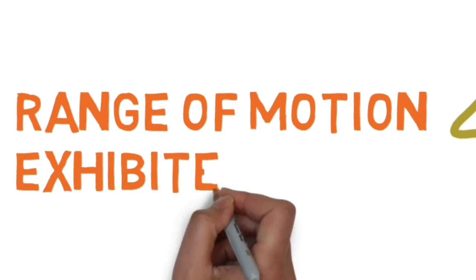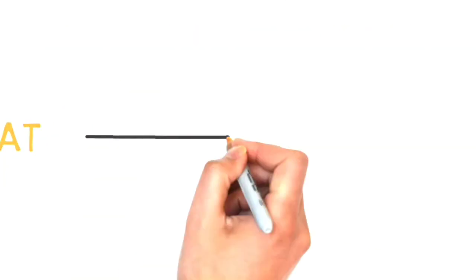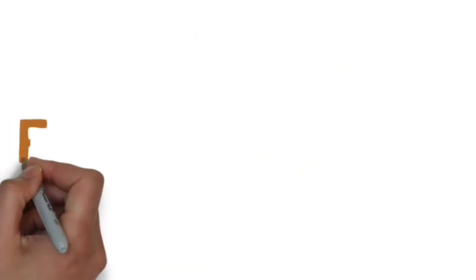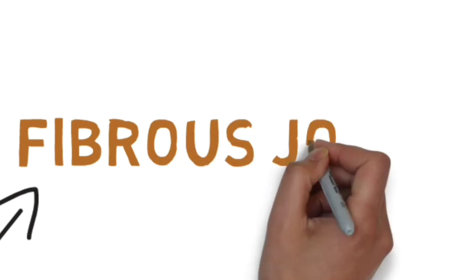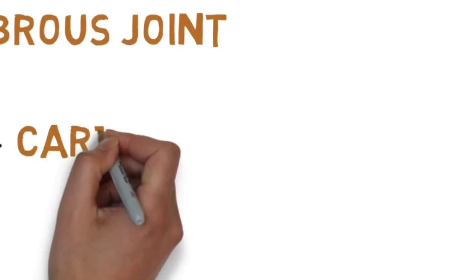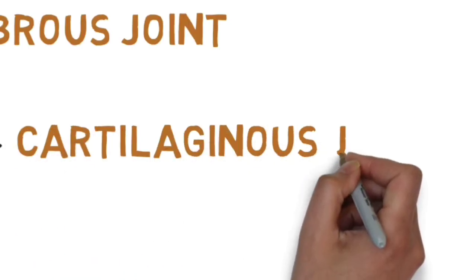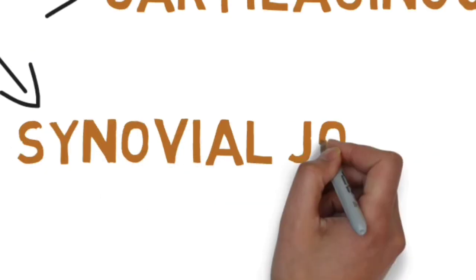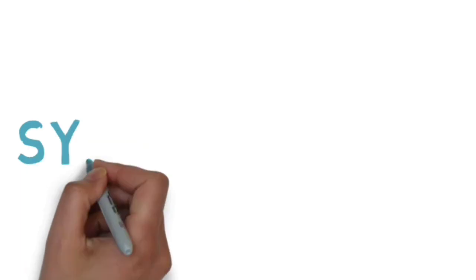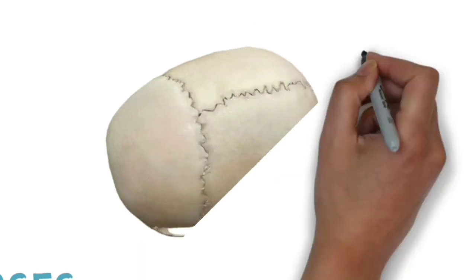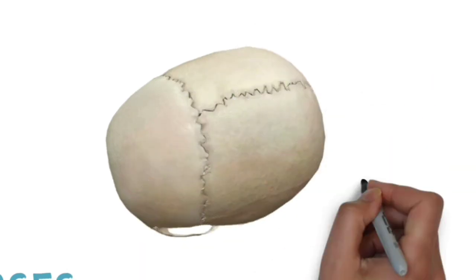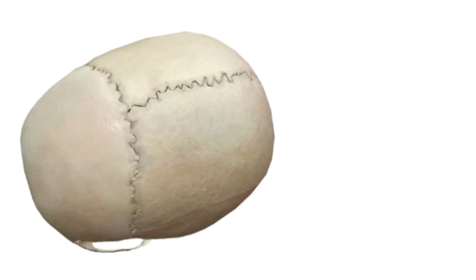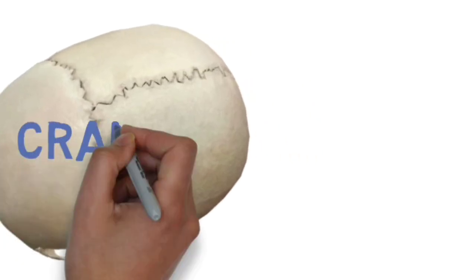Based on tissue articulation, there are three joint types: fibrous joint, cartilaginous joint, and synovial joint. The fibrous joint is highly immobile and subdivided into three types. The best example is the cranial sutures, which are immobile and connected by fibrocartilage.